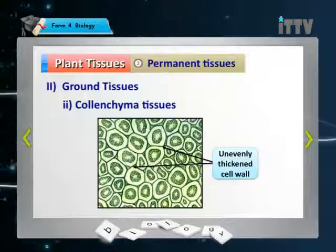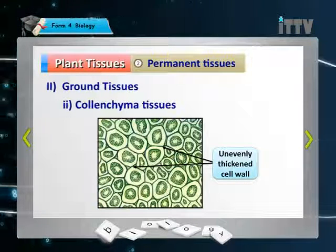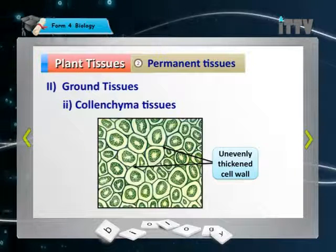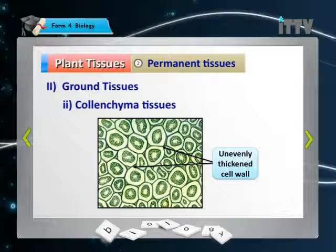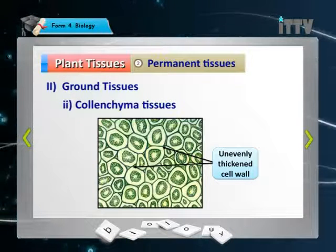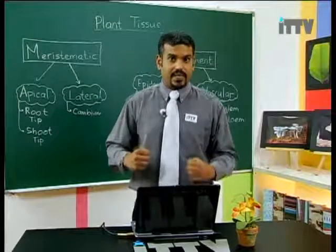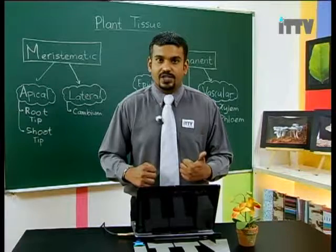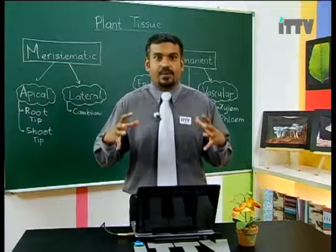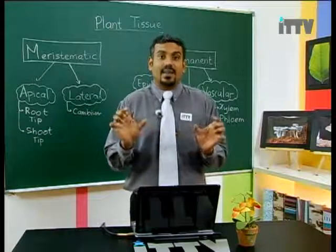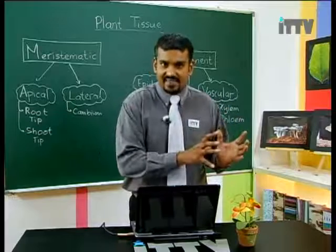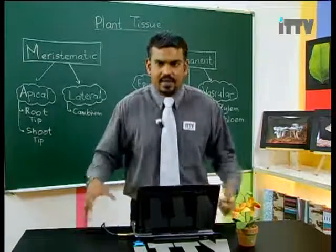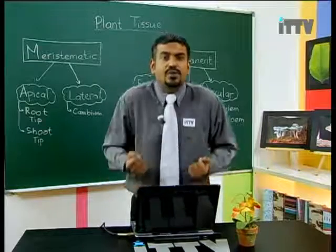The next tissue is the colenchyma tissue. Pay attention to the diagram — each cell has a very thick cell wall. Colenchyma tissues consist of elongated, polygonal cells with unevenly thickened cell walls, especially at the corners. The cell walls are thickened by cellulose and pectin, which makes the cells strong and flexible. Since it has thick walls, its function is obviously to support the plant.